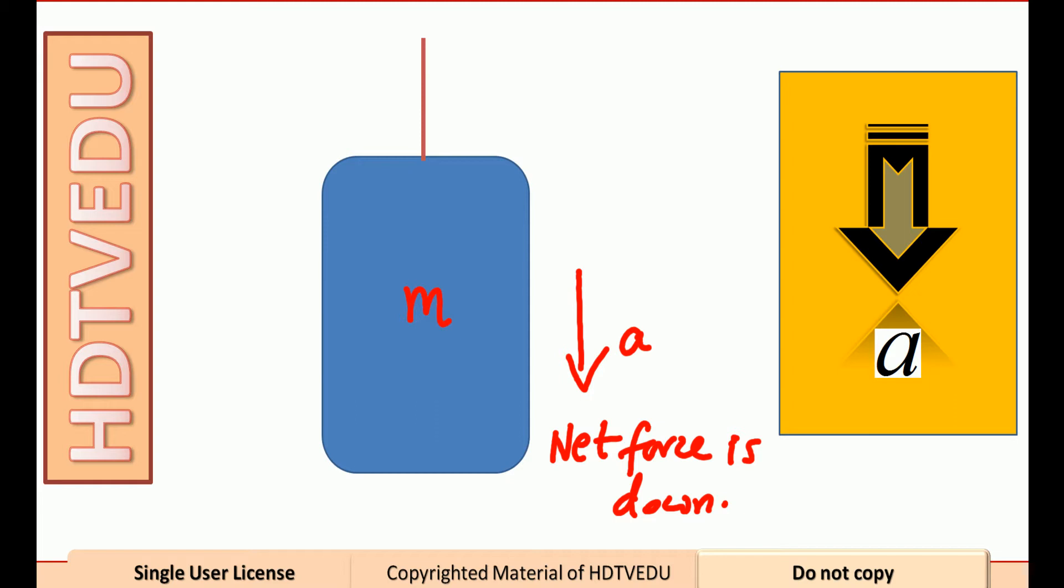What is the bigger force? The gravitational force. Why? The net force is down. If net force is down, the force down has to be greater than force up, because gravitational force is the force that acts vertically down.